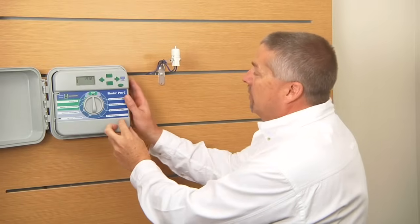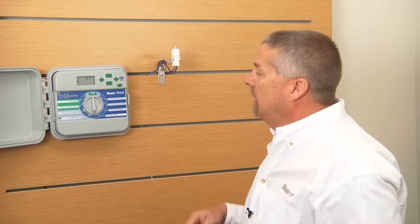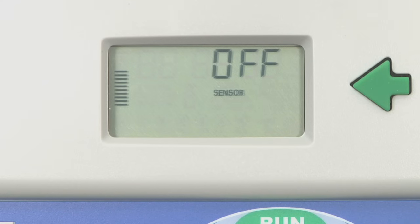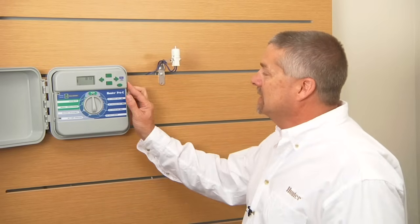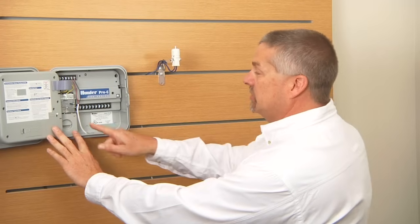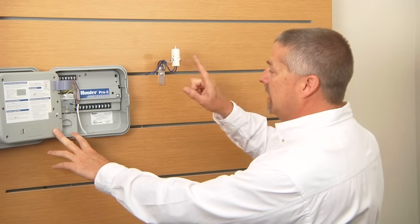Now one of the other common questions is my display says sensor off all the time. If your controller always says sensor off, one of the things that you'll want to look at is, remember, this is just an extended circuit.